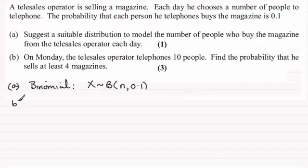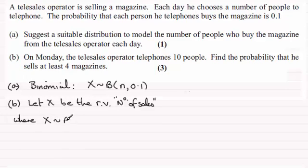Now for part B, we're told that on Monday the telesales operator telephones 10 people. Find the probability that he sells at least four magazines. So if I define this random variable, let X be the random variable, the number of sales. This will be distributed binomially, where X is distributed binomially and the number of trials is going to be 10, because 10 people here, and probability of a sale is 0.1.